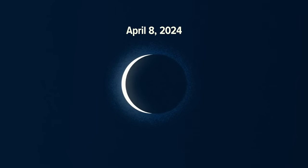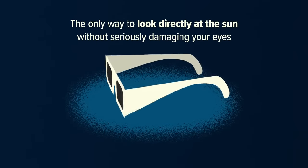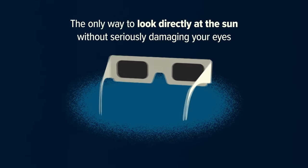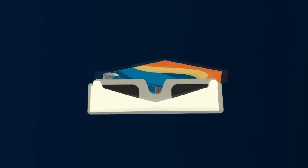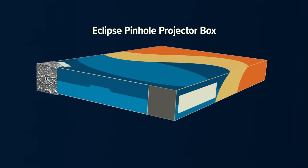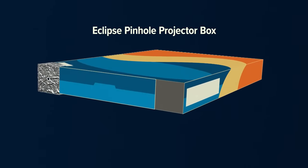Time is running out to get your solar glasses for safe viewing of the Great American Eclipse. Those shades are the only way to look directly at the Sun without seriously damaging your eyes. But if you can't get your hands on those, you can make an eclipse pinhole projector box at home, which can be a fun project for the whole family.